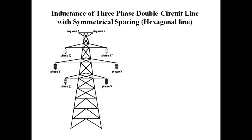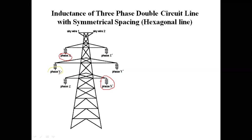As shown in the figure, we have two lines side by side. Phase x is in one circuit and phase x' is in the other circuit. Similarly, phase y and y' are the yellow phases, and phase z and z' are the blue phases. These three phases in two circuits are placed to make a perfect hexagonal shape.